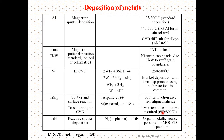For titanium nitride (TiN) deposition, reactive sputtering is used. The reaction is carried out in plasma with direct reaction between titanium and nitrogen. An organometallic source is also possible via metal-organic chemical vapor deposition (MOCVD).